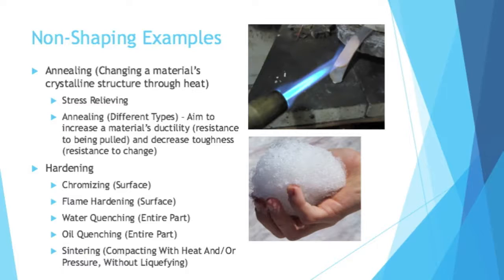If we're not annealing something, we're hardening it. There's chromizing — a surface treatment where you apply chrome to the surface. There is flame hardening, which changes the properties of the surface. There's water quenching: if you've ever put something hot into water and watched the steam shoot out, that changes the properties of the entire part, not just the surface. There's also oil quenching, which quenches it a bit differently because oil has different properties than water.